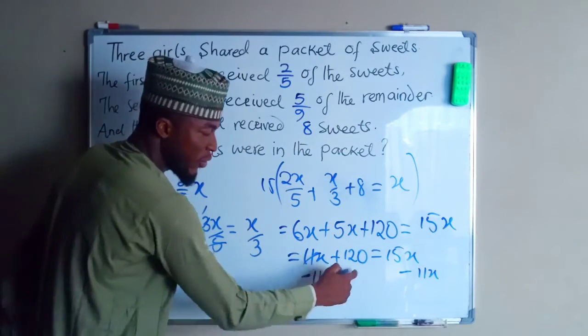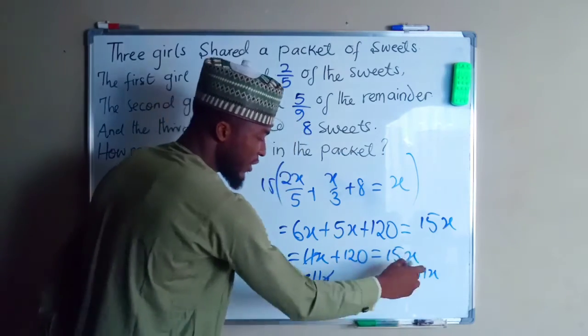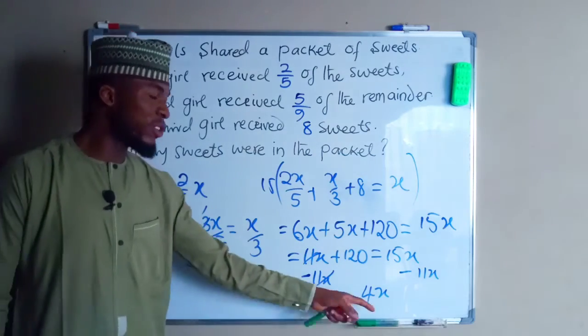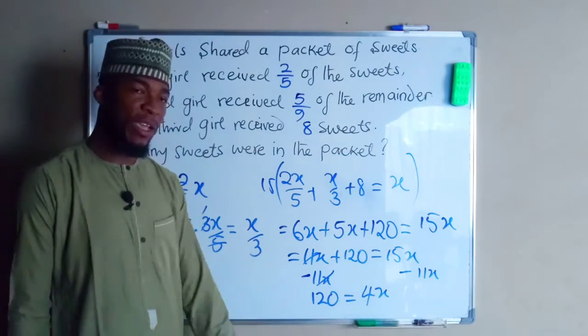So to find the value of X, which is the total number of sweets, we are going to divide both sides by 4.